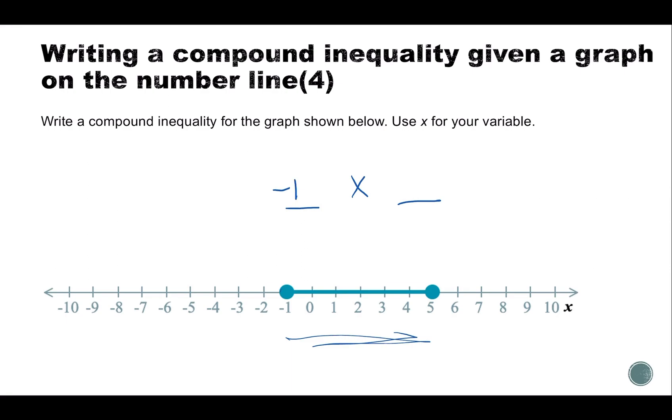So I have negative one, closed dot, so it's less than or equal to x which is less than or equal to five because five also has a closed dot.